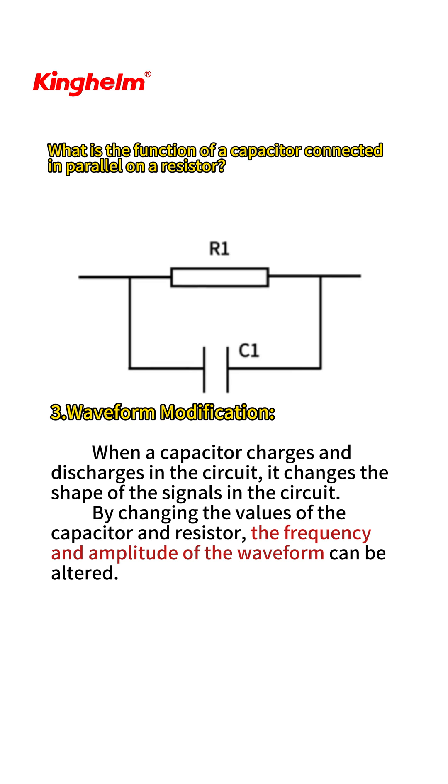Third, waveform modification: when a capacitor charges and discharges in the circuit, it changes the shape of the signals in the circuit. By changing the values of the capacitor and resistor, the frequency and amplitude of the waveform can be altered.